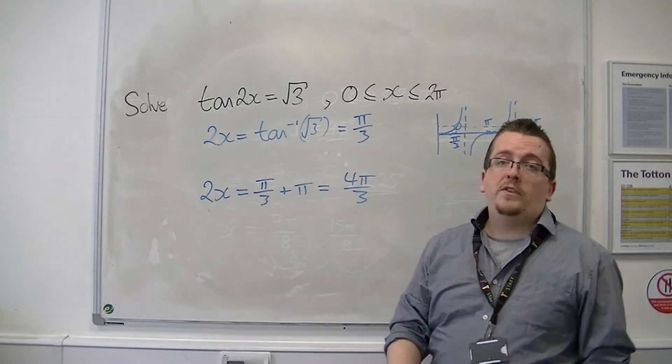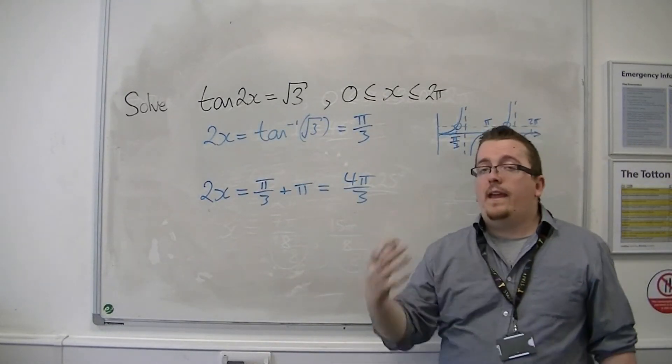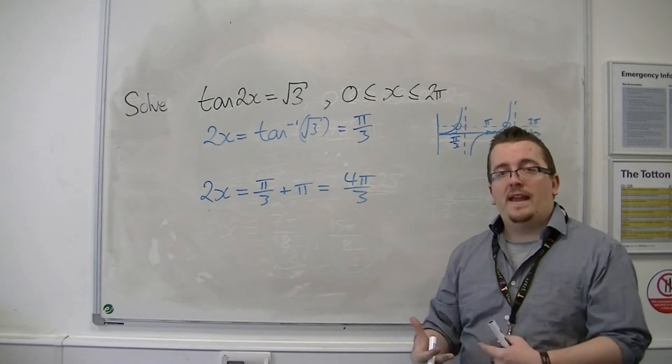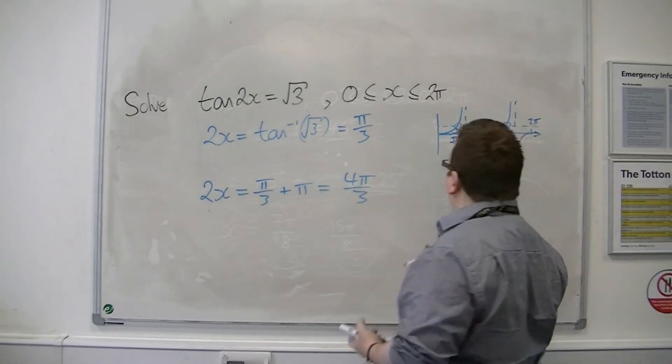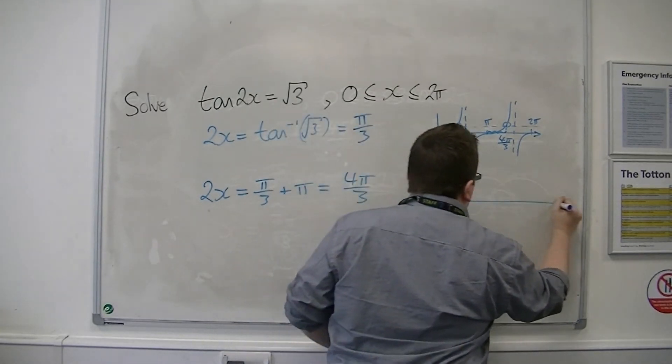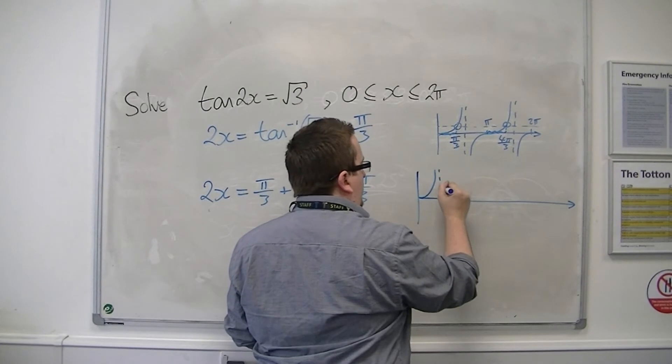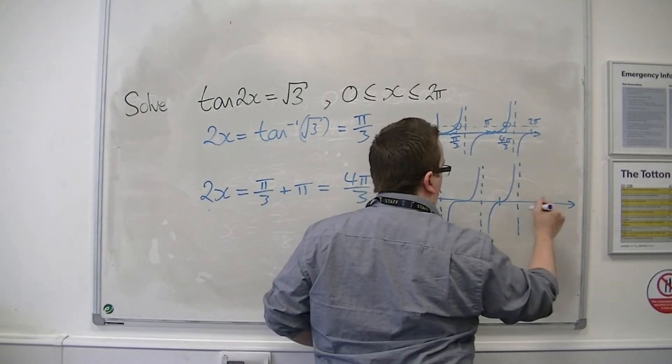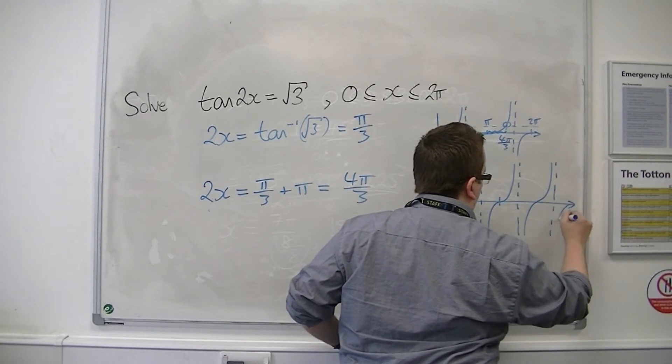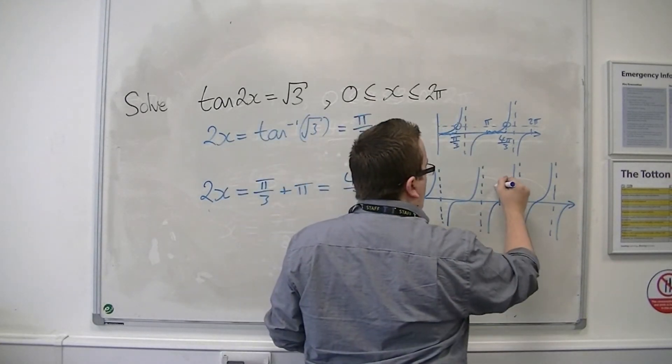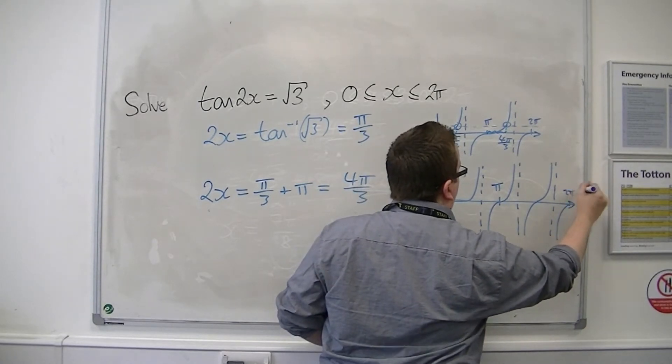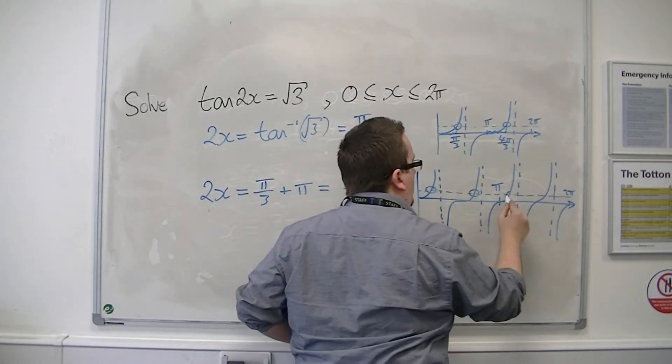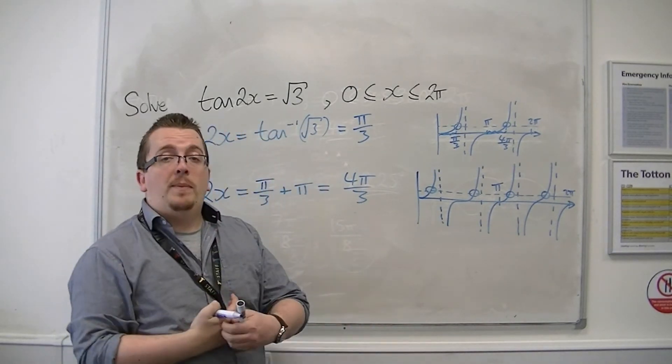Now, as it was before, these would be the solutions if I were solving tan x equals root 3. But I'm solving tan of 2x equals root 3, which, once again, is a stretch in the x direction by a factor of a half. And so what's happening is that root 3 intersects the curve at 4 distinct points. And so I'd be expecting 4 solutions.